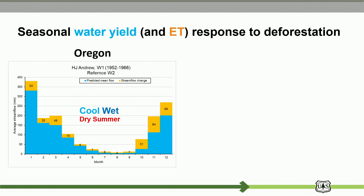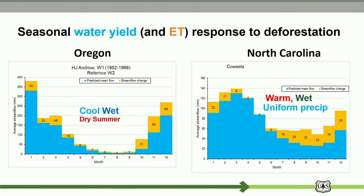With paired watershed data, we can also understand the monthly evapotranspiration — what the difference is between forested and clear-cut conditions. You can see the differences by season. The brown bar shows how much ET was reduced, or water yield increased. In different regions like Oregon, in summer there is no flow, so the difference is very small, but in fall there's a big difference. With evapotranspiration, we can better understand why in some months there are no differences — like at Coweeta in North Carolina in May there is no difference in water yield. We can explain this by summer ET differences and water storage change.